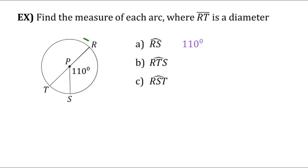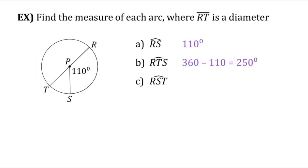Part B asks for arc RTS. That goes all the way around because it has to go through T. In arcs, the letters must go in the order named. So arc RTS goes all the way around the circle except for the 110-degree piece, arc RS. To find RTS, we do 360 minus 110, which gives us 250 degrees.